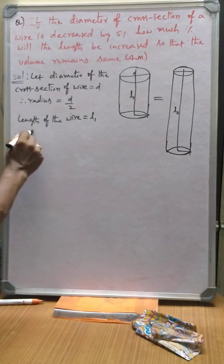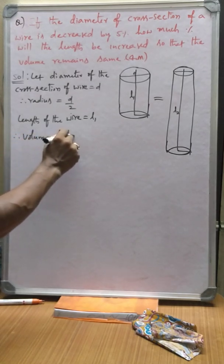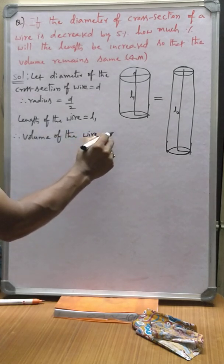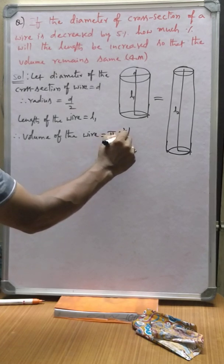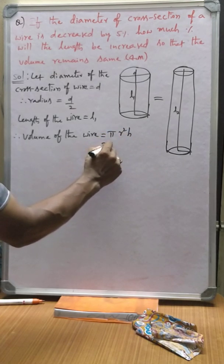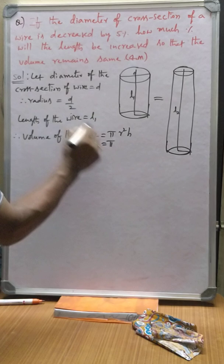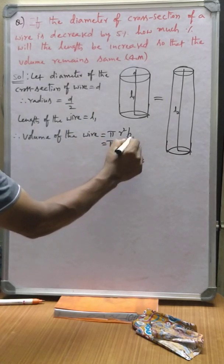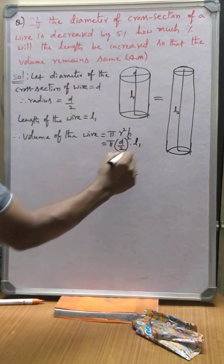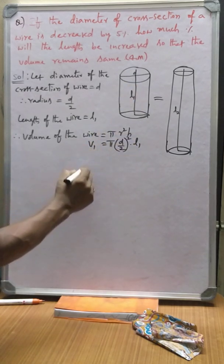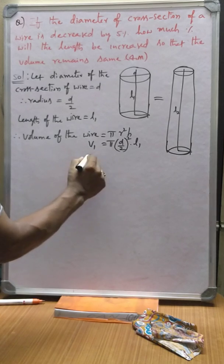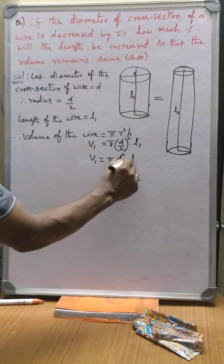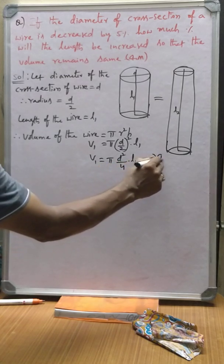Therefore, volume of the wire is equal to π R² H, here R means radius. D by 2 square, H means length of the wire is L1. Let the volume as V1. V1 is equal to π D² by 4 into L1.